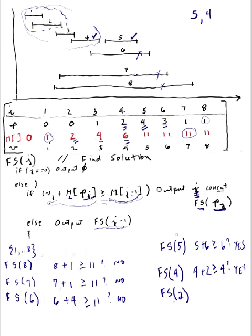FS of 2, I need to answer the question: V of 2, which is 2, plus M of P of 2. Let's see, P of 2 is 0. M of 0 is 0. Is that greater than or equal to M of 2 minus 1? M of 1 is 1. The answer is yes. So that means I will be including 2 in this set. I need to output 2 and concatenate FS of P of 2. FS, P of 2, here's 2, P of 2 is 0. If J equals 0, output empty. Nothing. We're done. So that's the end.